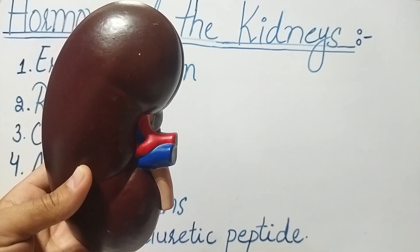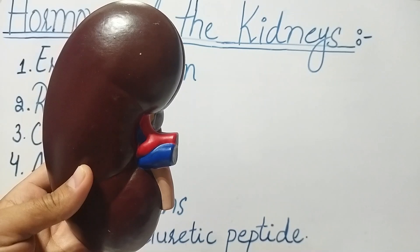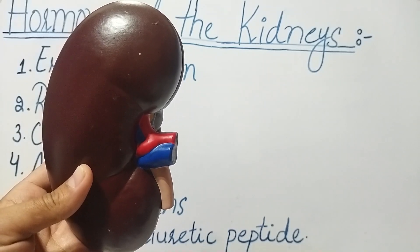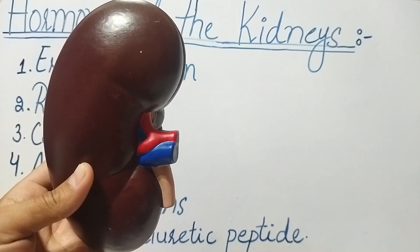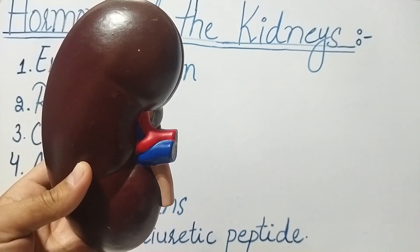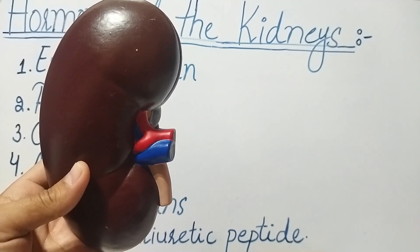Number four: aldosterone. Aldosterone helps regulate electrolyte balance and blood pressure. It is released in response to low blood pressure or low blood volume and it promotes the retention of sodium and excretion of potassium.